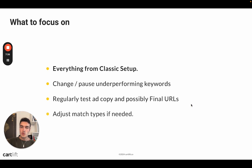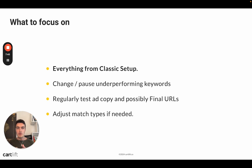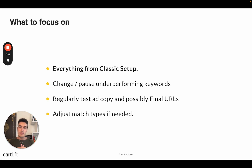You also want to adjust match types at some point if needed. If one of your keywords gets all the attention, you may want to reduce the bid for it or make the match type more restrictive — for example, from phrase to exact. If a keyword gets all the attention without much performance, you want to be more specific on that.